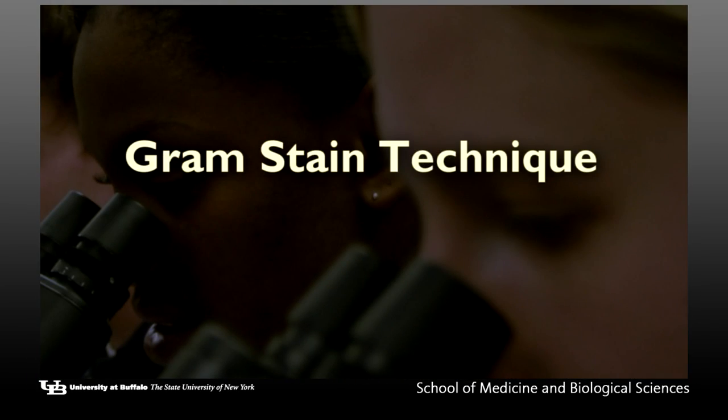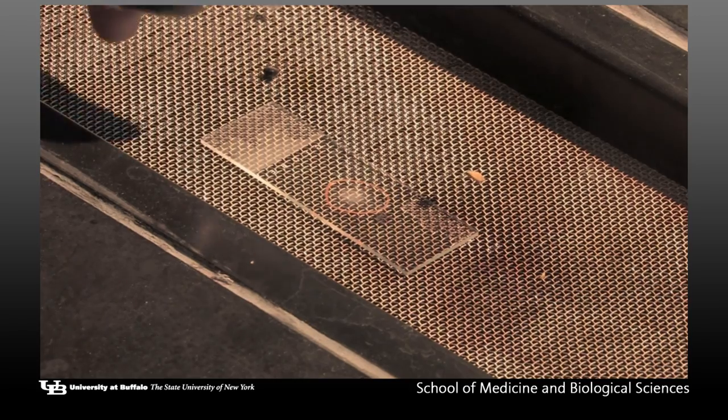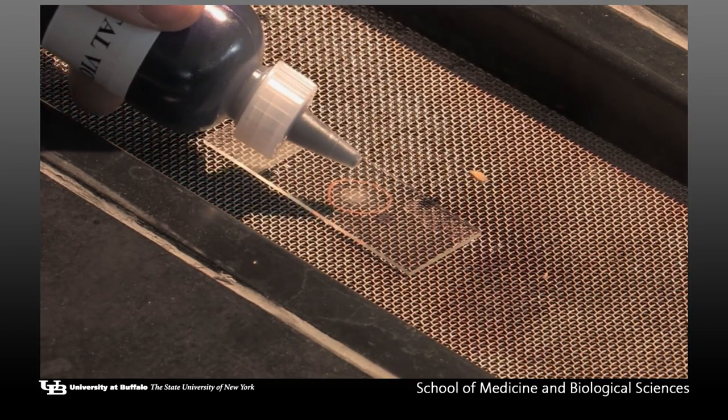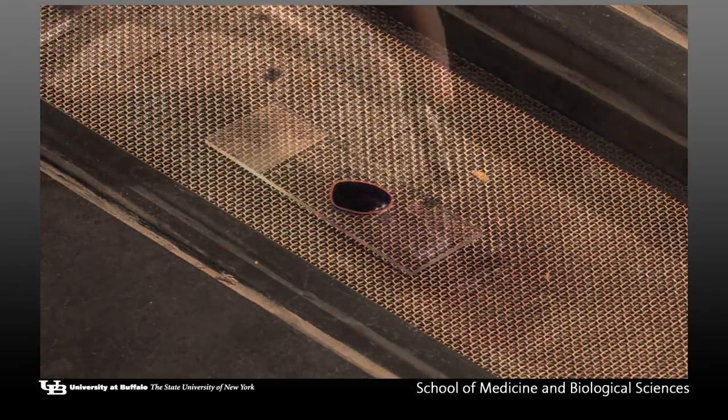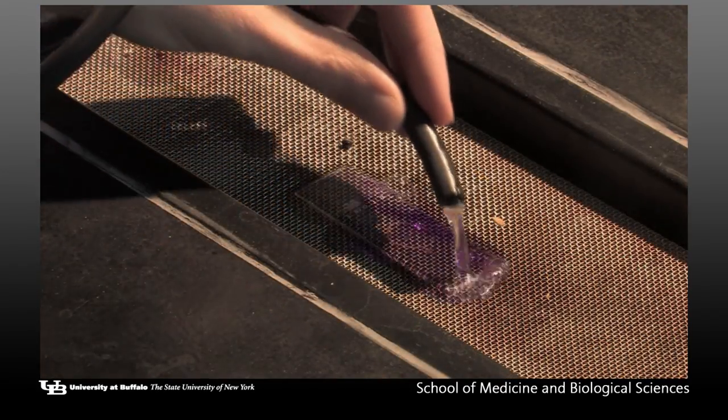Gram stain differential staining procedure. Stain slide using Gram staining technique. Flood the slide with crystal violet for two minutes. Wash off stain with water.